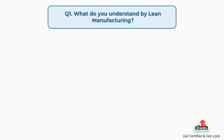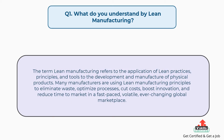Question number one: what do you understand by lean manufacturing? The answer is, the term lean manufacturing refers to the application of lean practices, principles, and tools to the development and manufacture of physical products. Many manufacturers are using lean manufacturing principles to eliminate waste, optimize processes, cut costs, boost innovation, and reduce time to market in a fast-paced, volatile, ever-changing global marketplace.